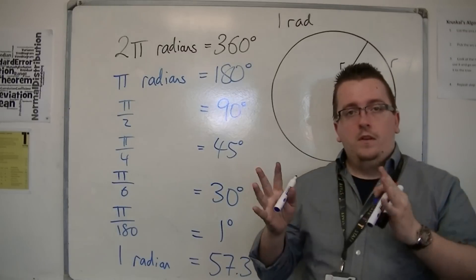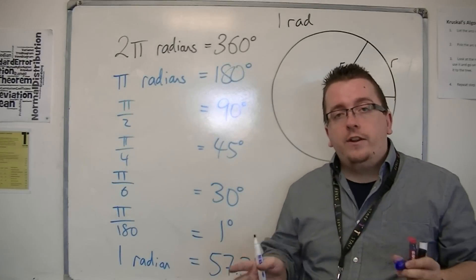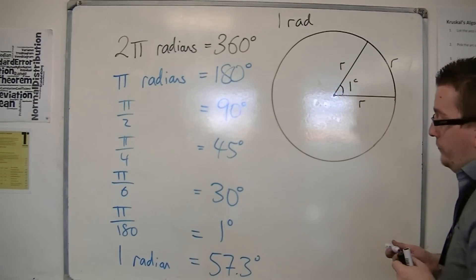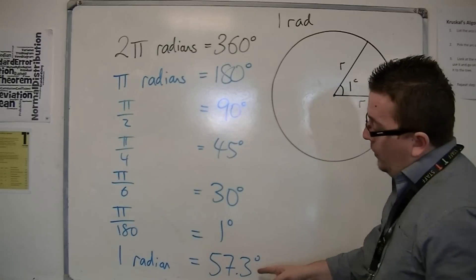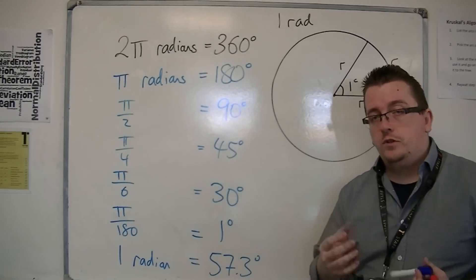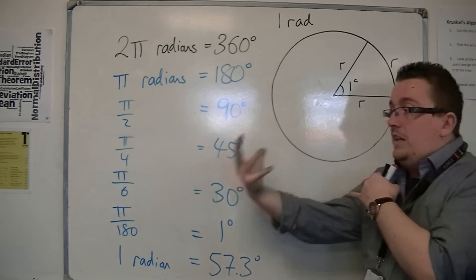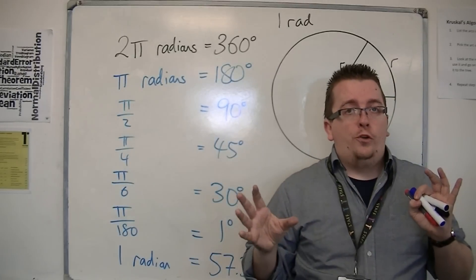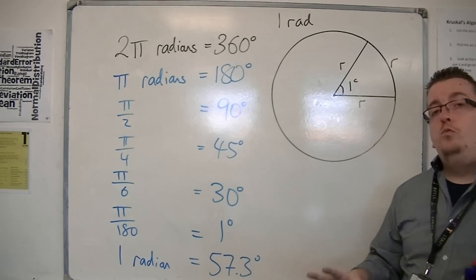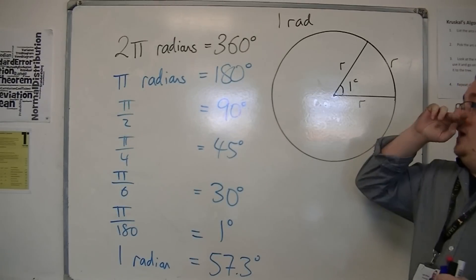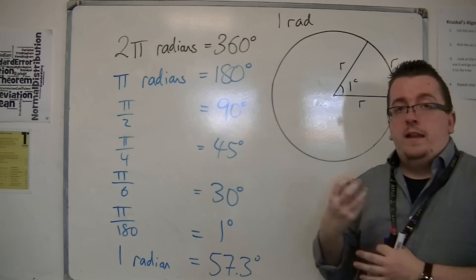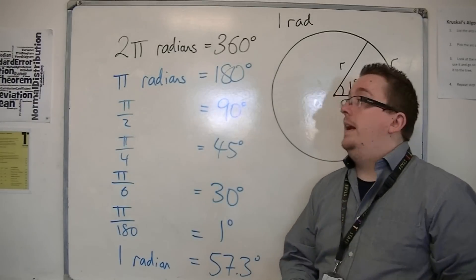So there is a direct conversion between radians and degrees. But the radians are much nicer to work with, because it allows us to not have to go into decimals so much. But it is just another form of measurement of an angle. So don't worry too much about it, in the sense that it's not too complicated.